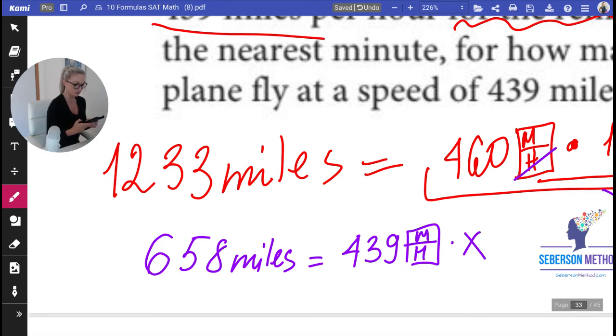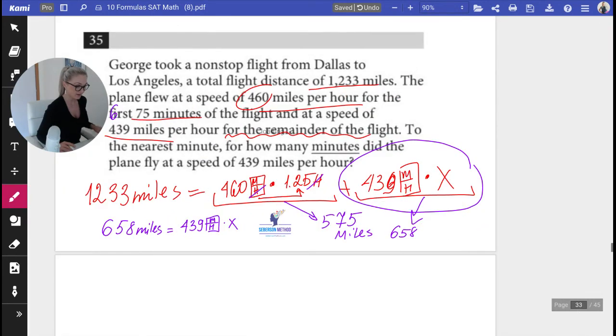And we get 1.498. So approximately—how many minutes? So this is in hours. Your X, the X that you found, that's in hours. So we have 1.4988. So what I do is I multiply this by 60 to convert it back into minutes.